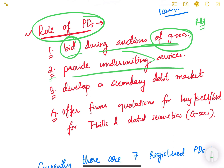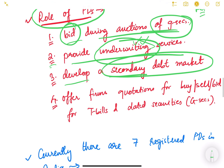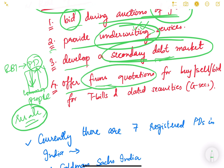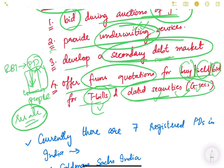The second role is they provide underwriting services, which we will study below. Third, they develop a secondary debt market — once RBI issues government securities to primary dealers, primary dealers sell to common people who can then buy and sell back, creating a secondary market where resale happens. They also offer firm quotations for buying, selling, or bidding of treasury bills and dated government securities.